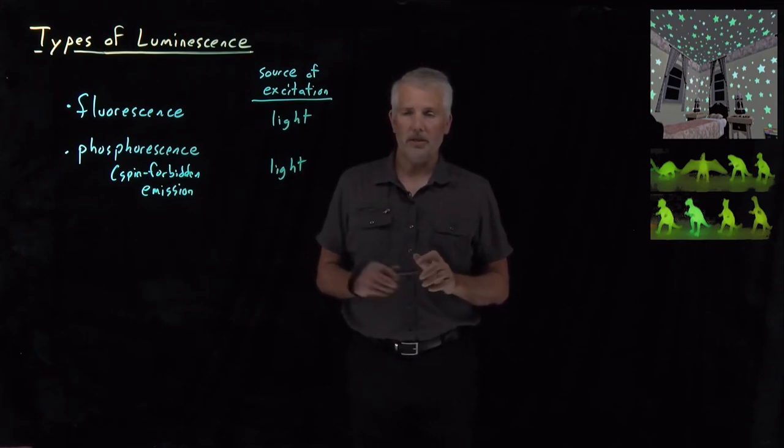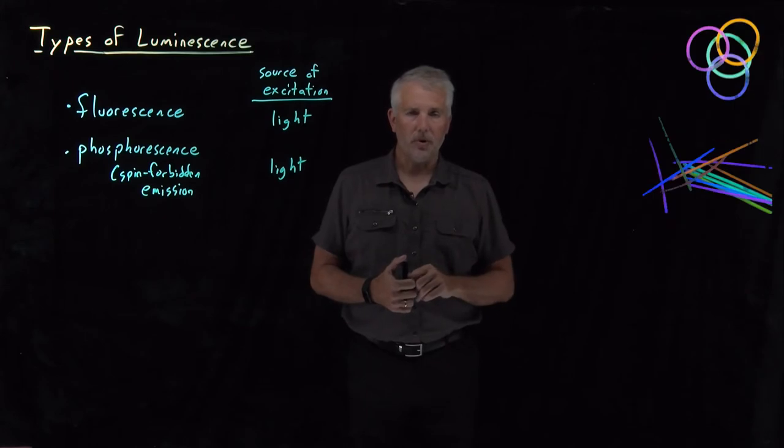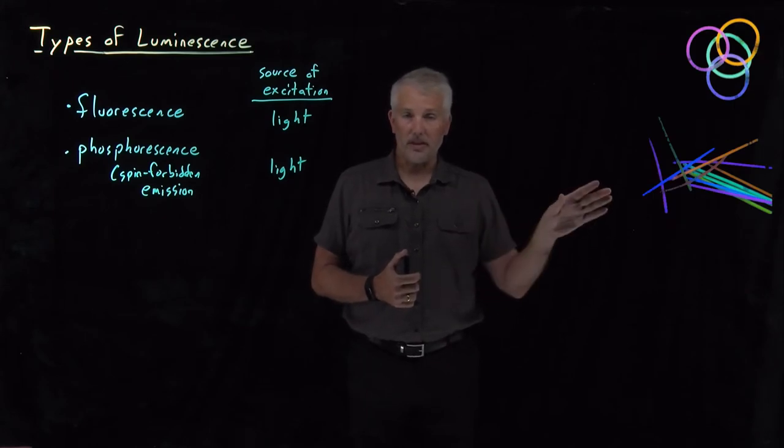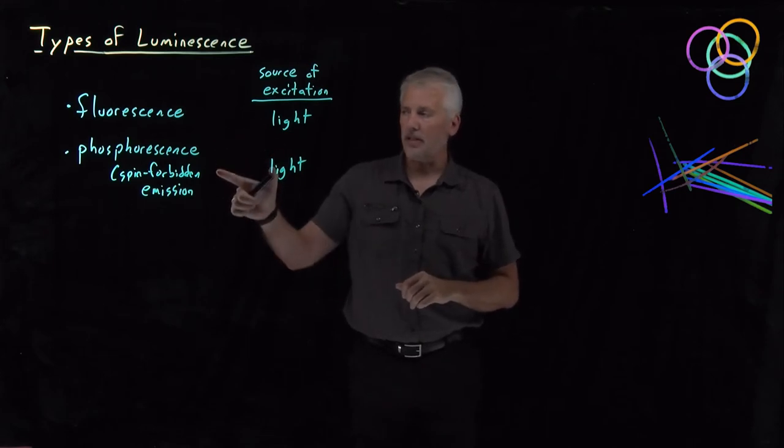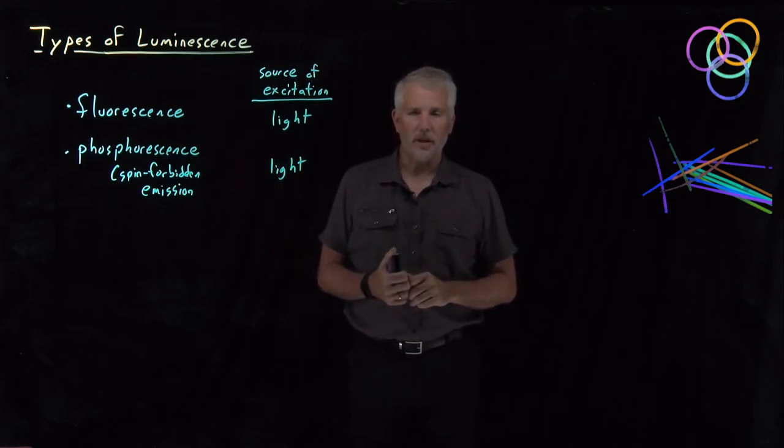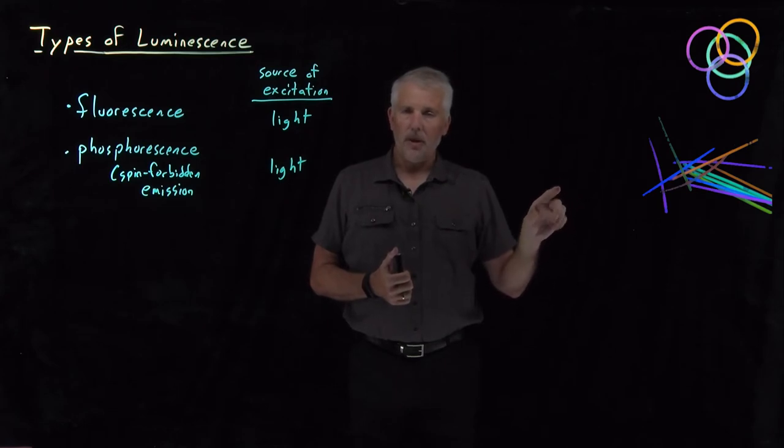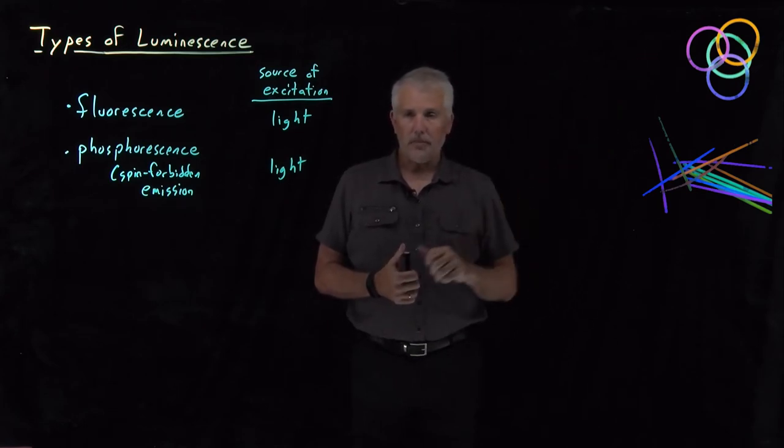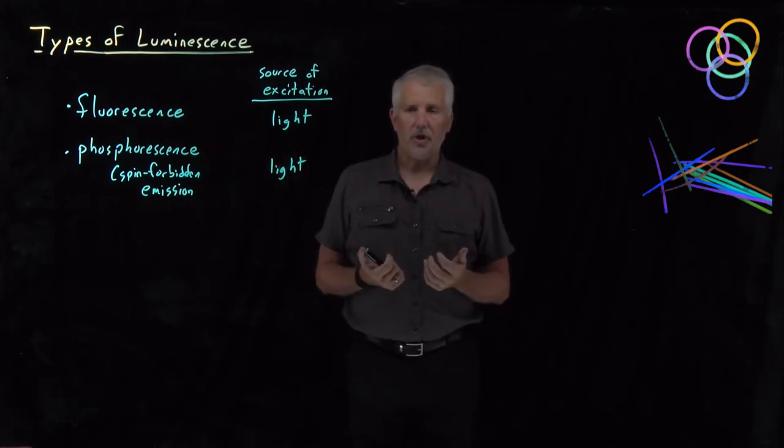There's other types of luminescence where the excitation doesn't happen with a photon. For example, you're all familiar with glow sticks. And because of the color of the glow sticks, you might immediately think that's fluorescence or phosphorescence going on. But if you think about it, you realize that can't be the case because, first of all, they glow for some period of time, so it can't be fluorescence.